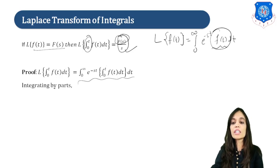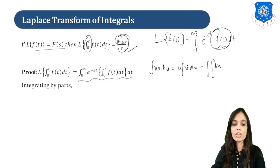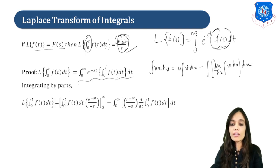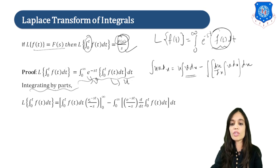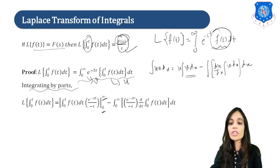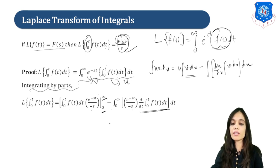Now let us solve this by using integration by parts, that is the formula: integral of u·v dx = u times integral of v dx, minus integral of (du/dx times integral of v dx) dx. If we apply this formula, we take the exponential term as v. Integration of v dx will be e raised to minus st upon minus s, with limits 0 to infinity.